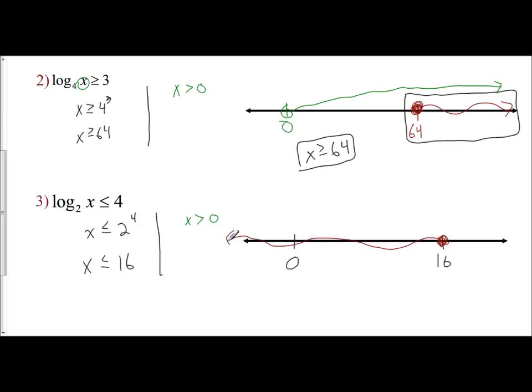However, this boundary says x can only exist when it's greater than 0. And so I get to have a boundary here. Because as soon as I pass 0 with this x is less than or equal to 16, I am going where x cannot exist.